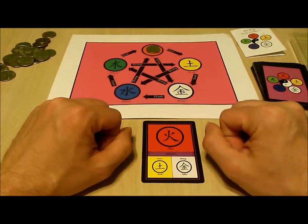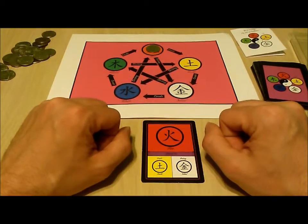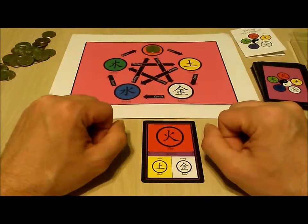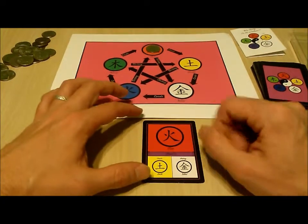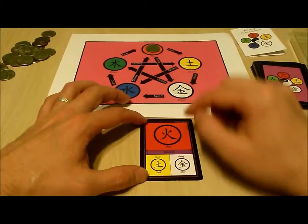Alternately, you can spend or remove a token from an element to place a token on the created element. So you can use a fire card to remove a token from the fire space and place one on the earth space.